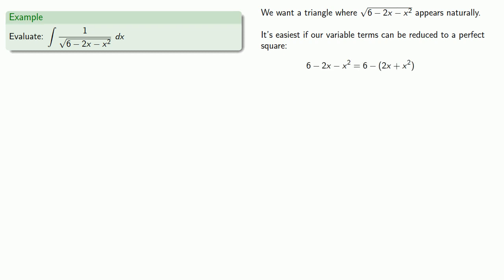6 minus 2x minus x squared is 6 minus 2x plus x squared. We'll complete the square by adding 1 on the inside of the parentheses. But since we don't want to change the expression, we'll also have to add 1 on the outside. So our expression is 7 minus x plus 1 squared.